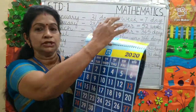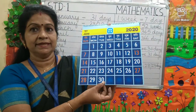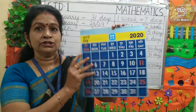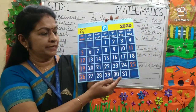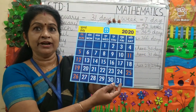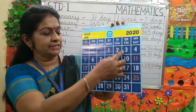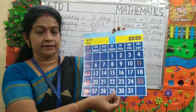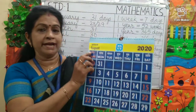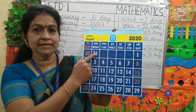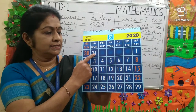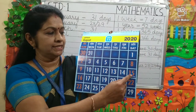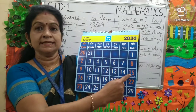Next is June. June has 30 days. Next is July. July has 31 days. Can you tell me which day is 31st July? It is Friday. Next is August. August has 31 days. Can you tell me which day is 15th August, Independence Day? It falls on Saturday.